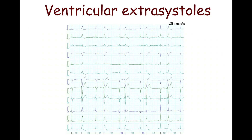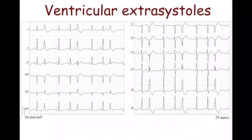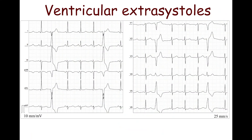Ventricular extrasystoles may produce bigeminy, with alternating complexes being extrasystoles. Frequent ventricular extrasystoles affect cardiac output. In ventricular trigeminy, every third complex is an extrasystole. In ventricular quadrigeminy, every fourth complex is a ventricular extrasystole.